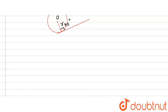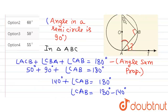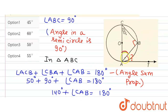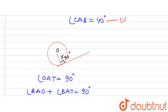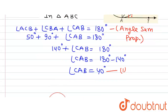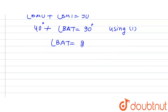Angle OAT equals 90 degrees. Angle OAT is the sum of angle BAO plus angle BAT. Angle BAO is the same as angle BAC, which from equation 1 is 40 degrees. So we can write: 40 degrees plus angle BAT equals 90 degrees, which gives us angle BAT equals 90 minus 40 equals 50 degrees.